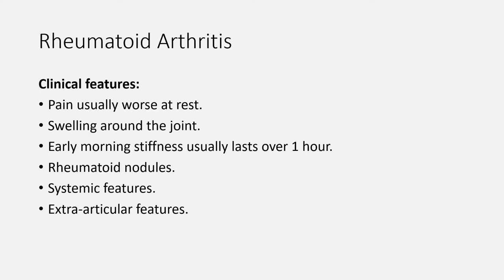Now let's move to rheumatoid arthritis — a chronic systemic inflammatory disease typically presenting as inflammatory arthritis affecting the small joints of the hands and feet, usually symmetrically, although any synovial joint may be involved. It is more common in women than in men. There is no specific diagnostic test; the diagnosis is clinical. Clinical features include: pain usually worse at rest, swelling around the joint but not bone swelling, early morning stiffness usually lasting over one hour, rheumatoid nodules (hard firm swellings over extensor surfaces), and systemic features such as malaise, fever, sweats, weight loss, and lymphadenopathy.